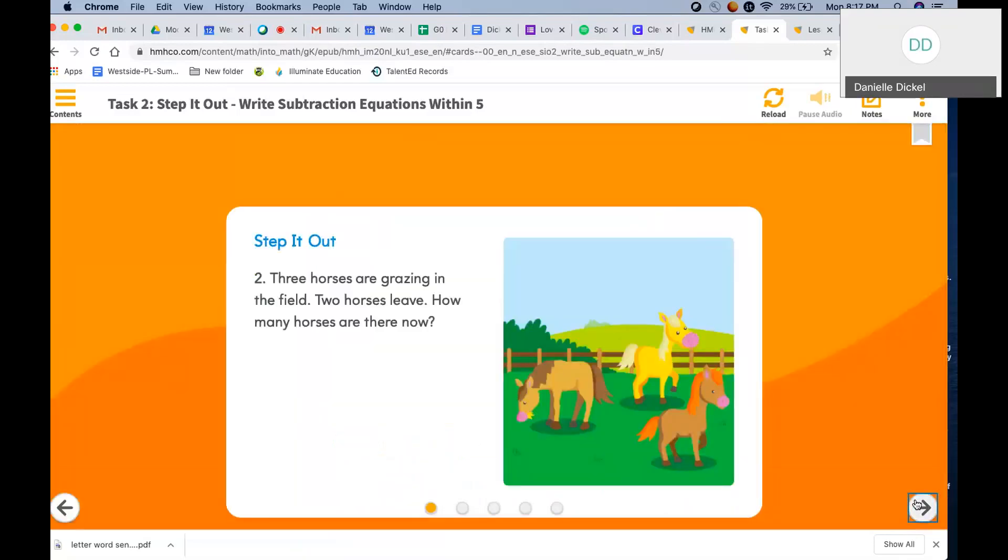Now in my picture I have horses. Yours is blank. If you want to draw another animal or circles or an X or something else to show the picture you can. Three horses are grazing in the field. Two horses leave. How many horses are there now?